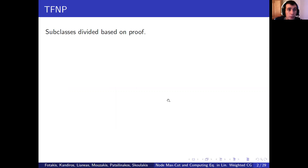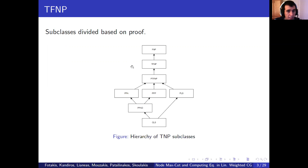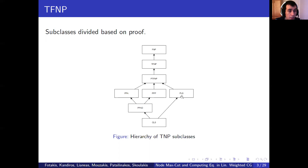The problems in TFNP are further categorized based on the combinatorial principle that guarantees the existence of a solution. Since we are dealing with promised problems, it must be possible to recognize the instance of a problem in polynomial time. PPP captures problems where existence is guaranteed by some pigeonhole collision principle. The class PPA contains problems related to the Handshake Lemma, while PPAD is at the intersection of these two classes and captures the difficulty of finding Brouwer fixed points. PLS captures the hardness of local search and finding local optima and equilibria.